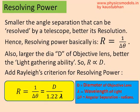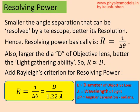Coming back to the concept of resolving power, R is equal to 1 by delta theta, where delta theta is the angular separation. So in our example, it is the 0.1 radians that we are talking about. If delta theta is very small and the telescope can handle a small delta theta, it means it's got a great resolving power. Lower the delta theta, greater the resolving power and better the telescope — we can pay more for it.